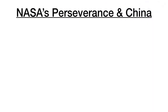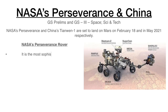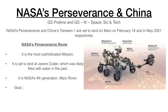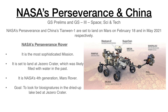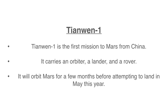The next headline: NASA's Perseverance and China's Tianwen-1 are set to land on Mars. NASA's Perseverance has already successfully landed on February 18, and China's Tianwen-1 is expected to land in May 2021. Perseverance has landed at the Jezero Crater, which was likely filled with water in the past. It is NASA's fourth-generation Mars rover and the goal is to look for biosignatures in the dried-up lake bed. Tianwen-1 is China's first mission to Mars; it carries an orbiter, a lander, and a rover, and will orbit Mars for a few months before attempting to land.